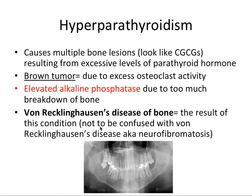Von Recklinghausen's disease of bone is the result of hyperparathyroidism, and it's not to be confused with what we discussed when covering benign connective tissue tumors. It's very confusing because both share the von Recklinghausen name, but they are two entirely different things. When you see 'disease of bone,' that differentiates it from the neurofibromatosis associated with connective tissues — disease of bone refers to hyperparathyroidism.